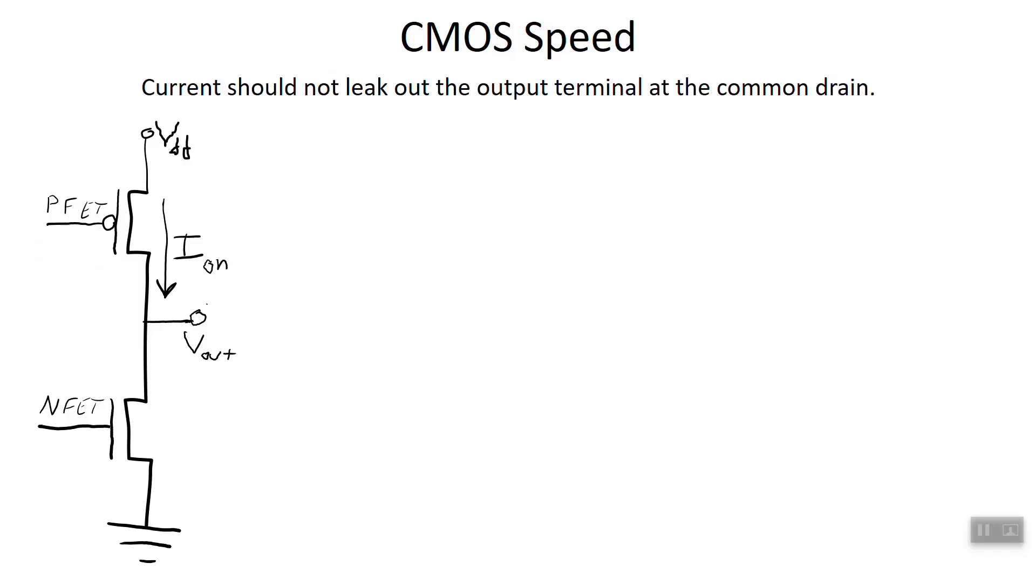Although it would be nice if CMOS switched from the high state to the low state instantly, it doesn't. There is a delay in that switching. We blame that delay on capacitances. The capacitance of the gates and the parasitic capacitance of the drain is what dominates that delayed switching speed. That's a key figure of merit for CMOS because how quickly it switches determines how fast that particular CMOS circuit can do its job.